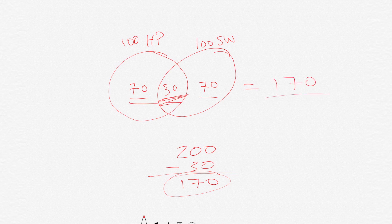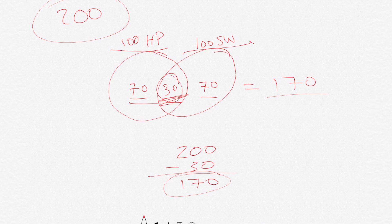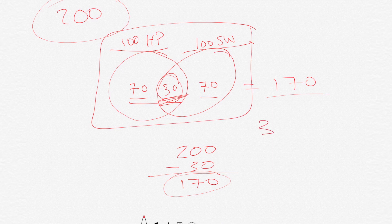If a question says the class has a total of 200 students, 100 like Harry Potter, 100 like Star Wars, and 30 like both — then 170 are in the diagram, which means 30 of them like neither, because you need everything to add up to 200.